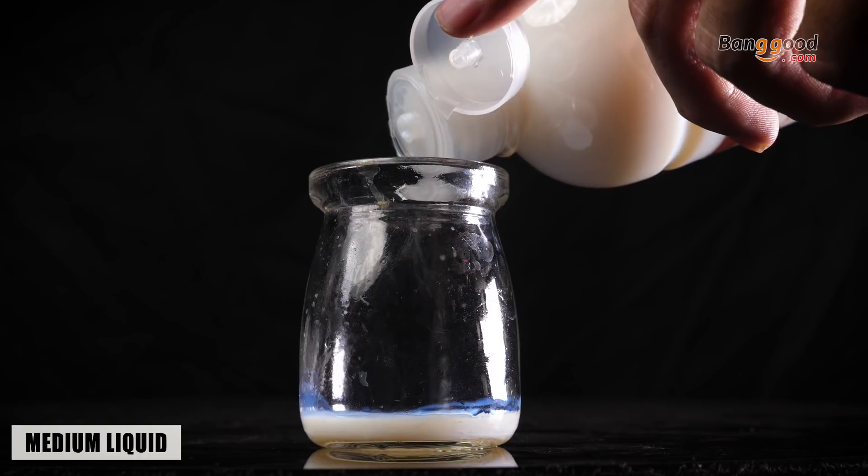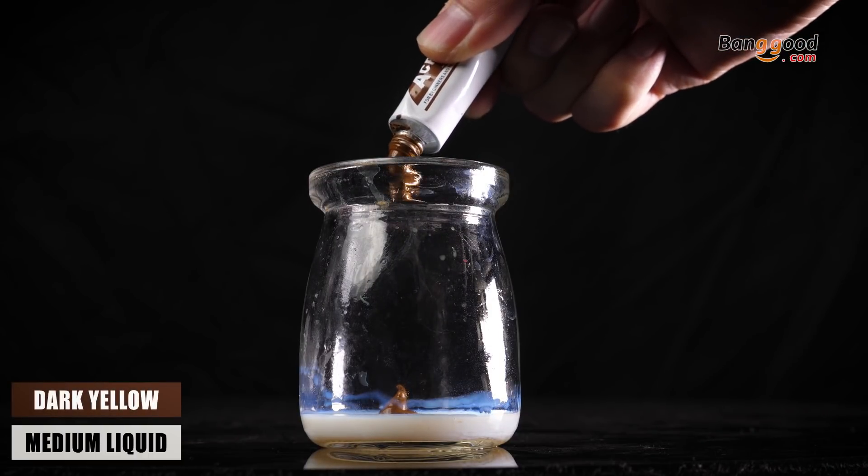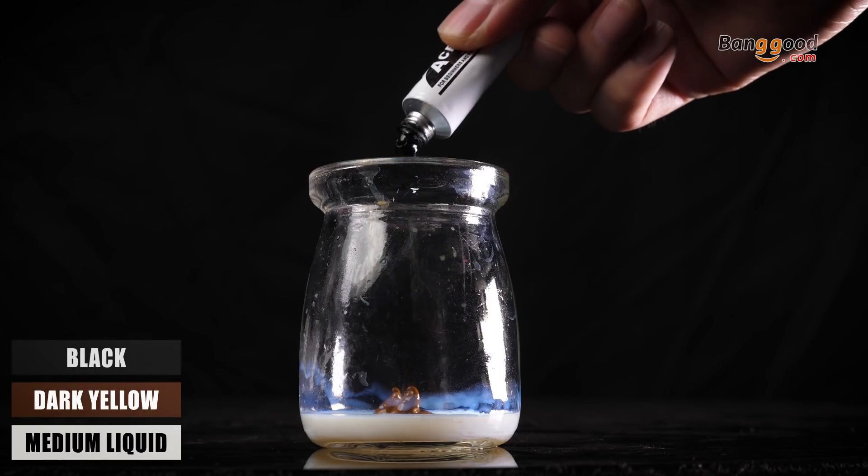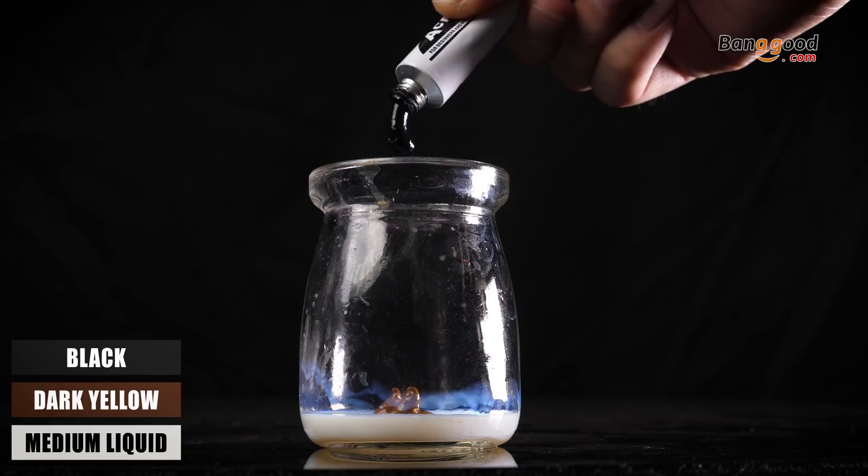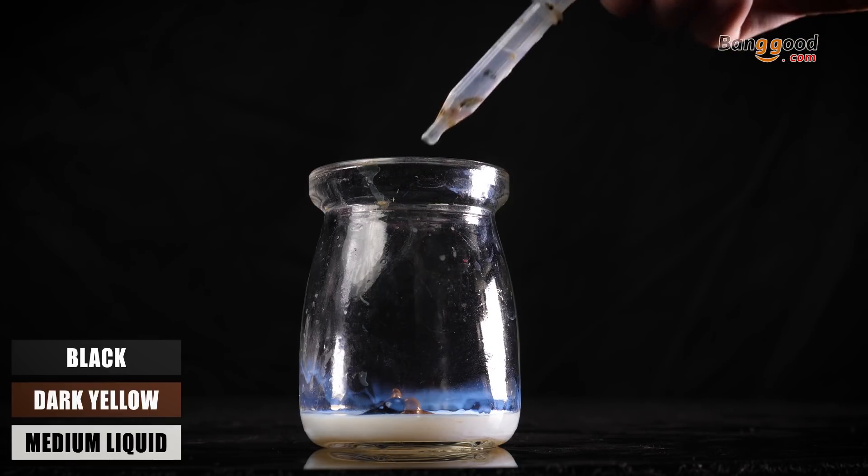I put the medium liquid, dark yellow, black color, and some water, then mix.